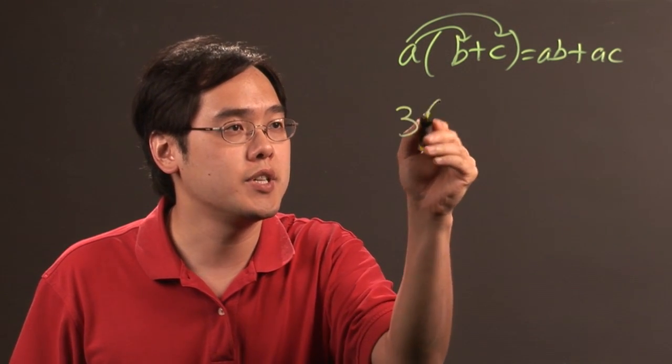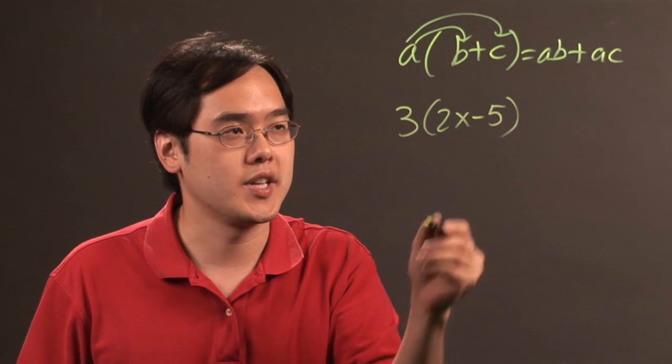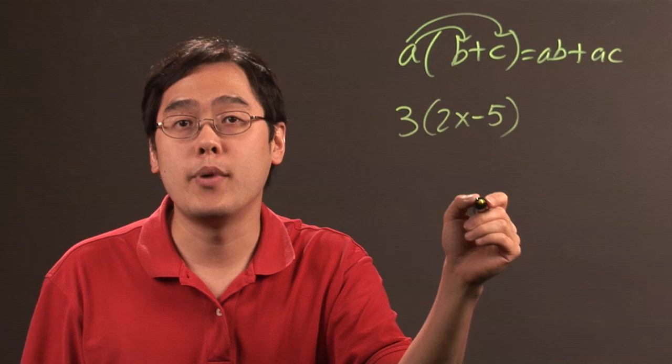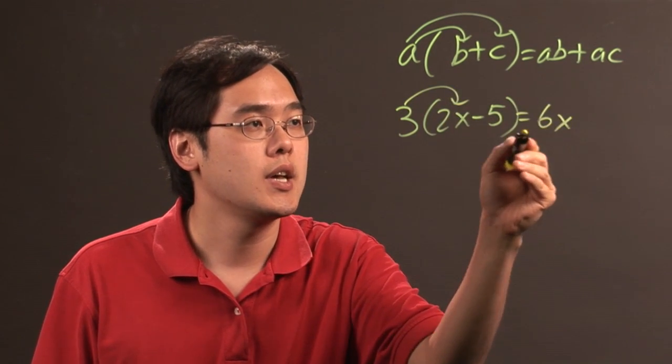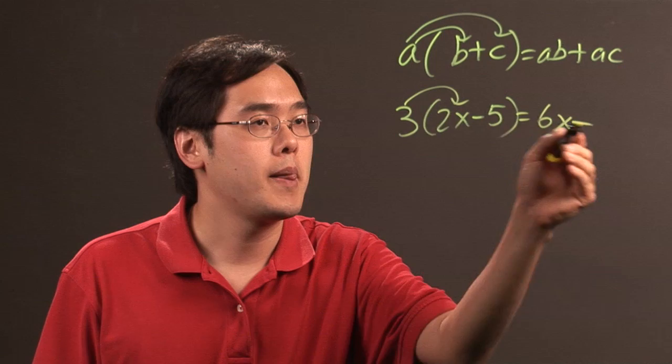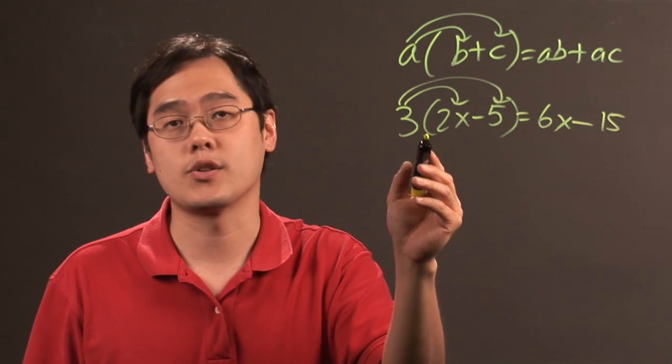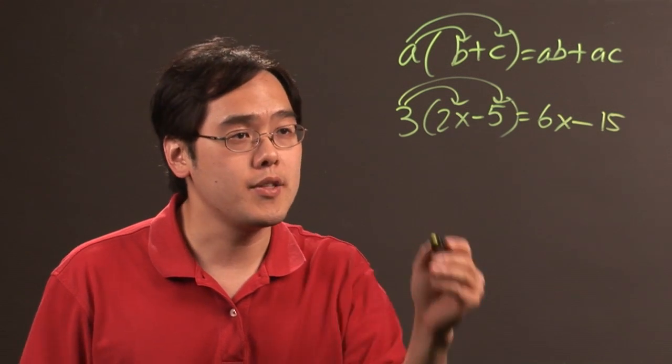So if you have something like 3 times 2x minus 5, for example, positives and negatives work the same way. You take the 3 and you multiply it by both terms on the inside. So 3 times 2x is going to give you 6x, and you carry over the sign, so 3 times 5 is going to give you 15. Now you can also think of it as 3 times negative 5, that will give you negative 15 as well.